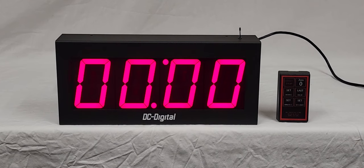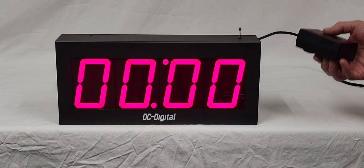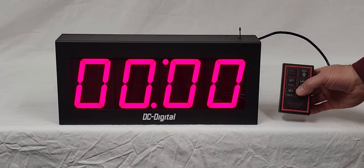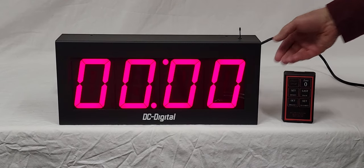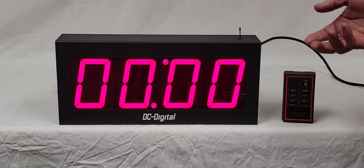Hello, this is Jim with DC Digital. Today I'm demonstrating a DC-40T-DN-W, a wirelessly controlled countdown timer. It is a 2.4 gigahertz RF radio, and the special part about this is that it flashes at zero.